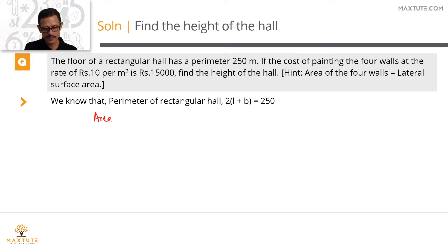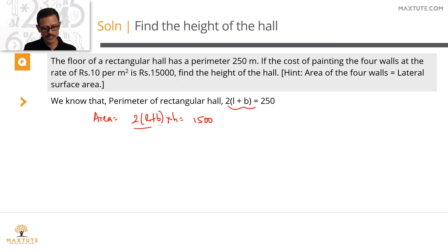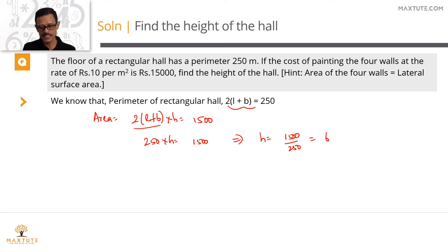The area painted equals the lateral surface area, which is 2(L + B) × H = 1,500 square meters. Since 2(L + B) = 250, plugging that in: 250 × H = 1,500, so the height of the hall equals 1,500 divided by 250, which equals 6. The unit is meters, so the height of the hall is 6 meters.